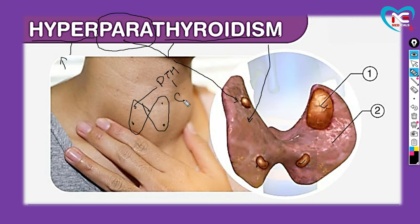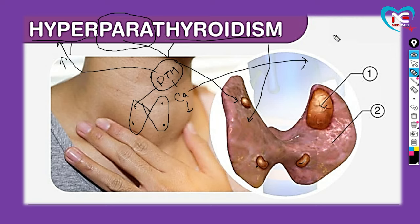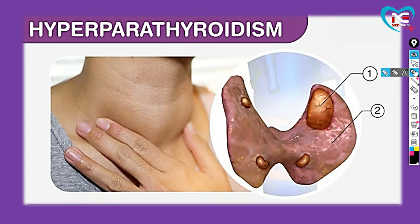Parathyroid gland parathyroid hormone secrete karti hai, jo ki aapke calcium level ko blood mein maintain karke rakhta hai. Agar yeh parathyroid gland apna function decrease kar de, toh blood mein calcium level bhi decrease ho jayega. Lekin agar yeh parathyroid gland apna function hyper kar de - means increase kar de - toh calcium level bhi increase ho jayega.